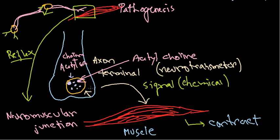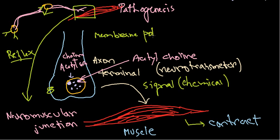The neurotransmitters are packaged inside a vesicle and stay there until they receive a signal. They get this signal via a nerve impulse — a change in membrane potential throughout the nerve ending. Membrane potential refers to the charge ratio inside versus outside the cell, and any change in this is called a membrane potential change.